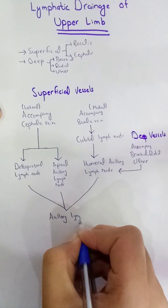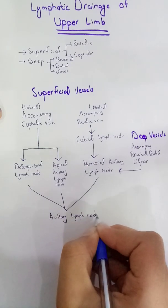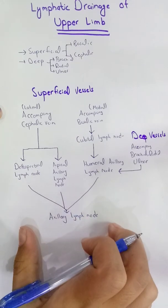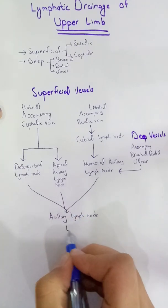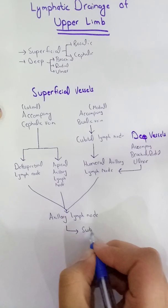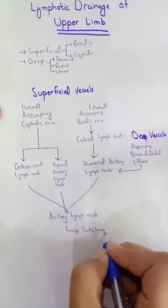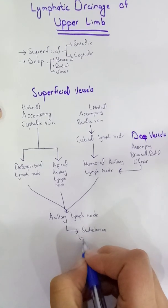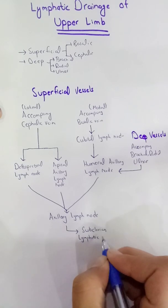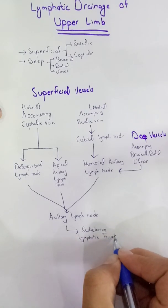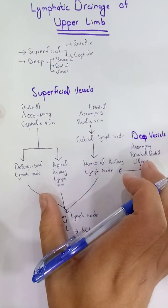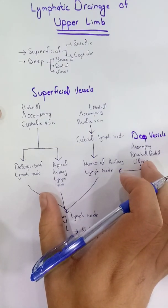All of these are collectively referred to as the axillary lymph nodes. The lymph from the axillary lymph nodes then drains into the subclavian lymphatic trunk. This completes the lymphatic drainage of the upper limb in the form of a flow chart.